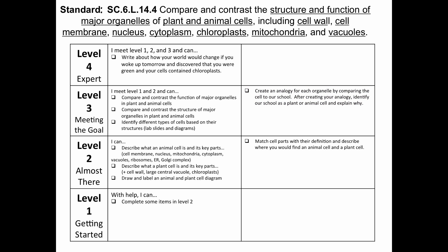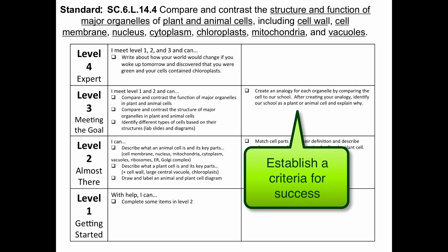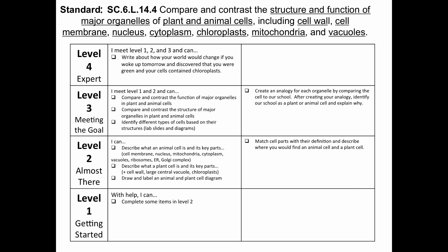To determine proficiency, the criteria of success is creating an appropriate analogy with 80% accuracy. Having a predetermined criteria of success assists the teacher in analyzing the student outcomes to make informed instructional decisions.